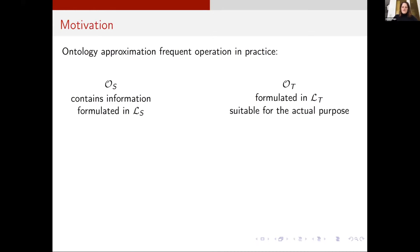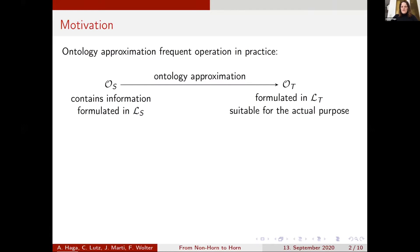On the other side, we have ontologies containing information formulated in a different language. Ontology approximation is when we have a source ontology, notated as OS, formulated in the source language, and we now translate this ontology into our chosen target language as our target ontology. This translation is ontology approximation.